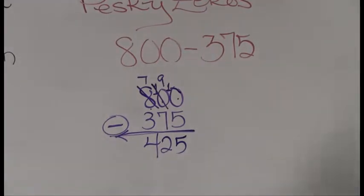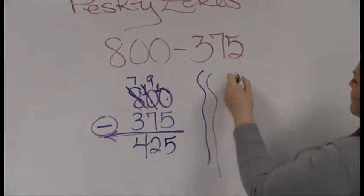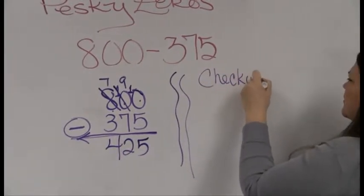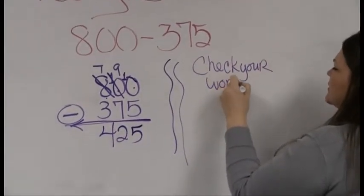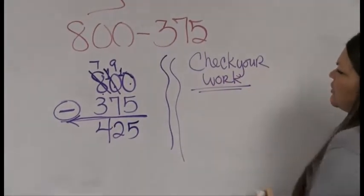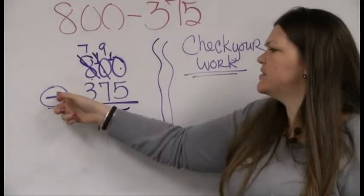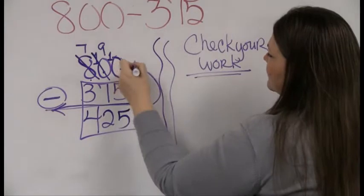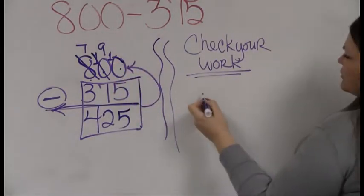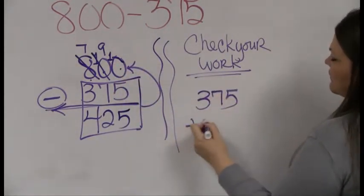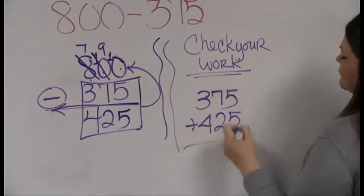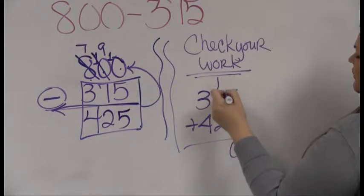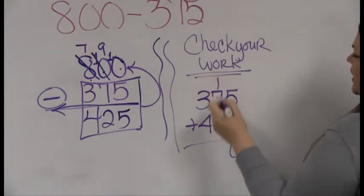Since so many of you really struggle with these problems when there's zeros around, I'm going to show you how to check your work. In math you can always check your work by moving backwards. We had said already that addition and subtraction are opposites. So if I'd like to check my subtraction, what I should do is take the bottom two numbers, add them back together, and see if I get to my total. Let's try adding 375 and 425. 5 and 5 is 10, carry the one. 7, 2, that's 9, and another one gives me 10. And there's 800. Check! Look at that, it worked.